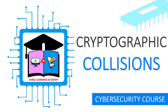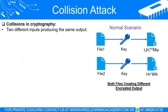Welcome to Shree Learning Academy. Our today's topic is cryptographic collision. So let's get started. Understanding collisions in cryptography: cryptography is the science of securing information by transforming it into an unreadable format. Its goal is to ensure the confidentiality, integrity, and authenticity of digital data. However, there are instances when cryptographic operations can result in a phenomenon known as collisions. Let's dive deep into this concept, understand its significance in different cryptographic contexts, and learn how to mitigate its potential risks.